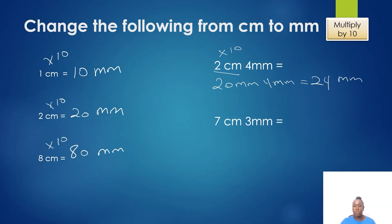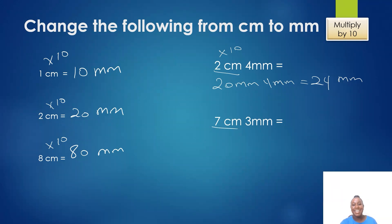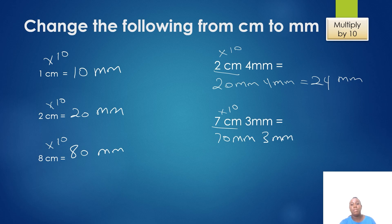Let's do our next question. 7 centimeters 3 millimeters — I would like to change it to millimeters, so I am going to change my centimeters first. It's going to be 7 multiplied by 10, which gives me 70 millimeters, plus my 3 millimeters, giving me a total of 73 millimeters.